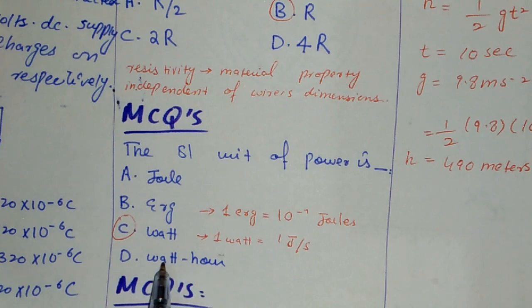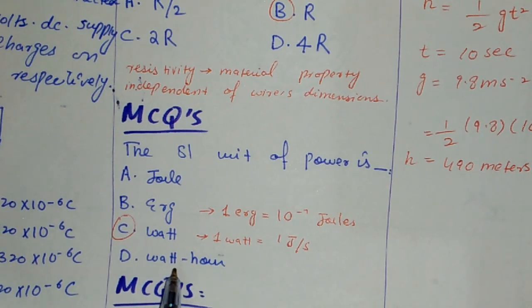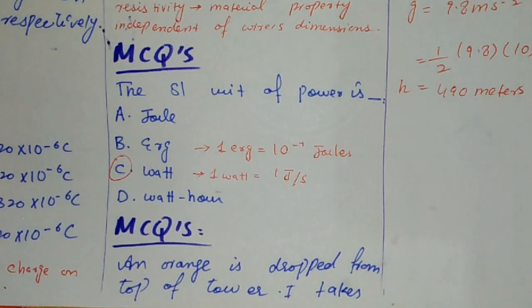Joule, erg, and watt hour - all these are units of energy, so we have no concern with these. One erg equals 10 to the minus 7 joules.